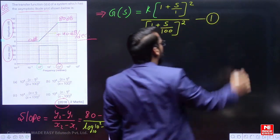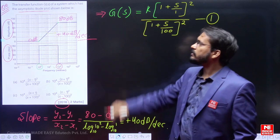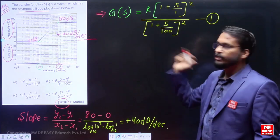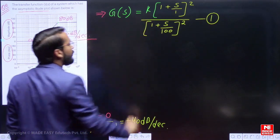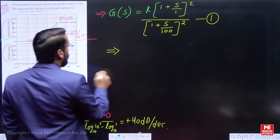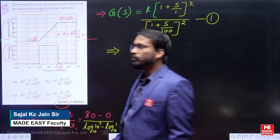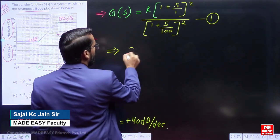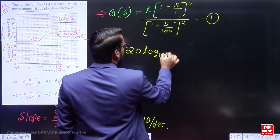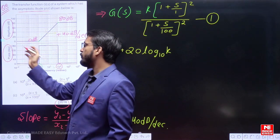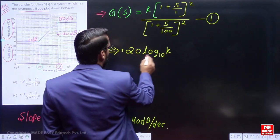In this way, we have the rough standard format of this system's transfer function G(s). But the answer is possible only if we have the value of K. We know that whatever the initial magnitude — when there is no slope — that magnitude will be equal to 20·log₁₀(K).